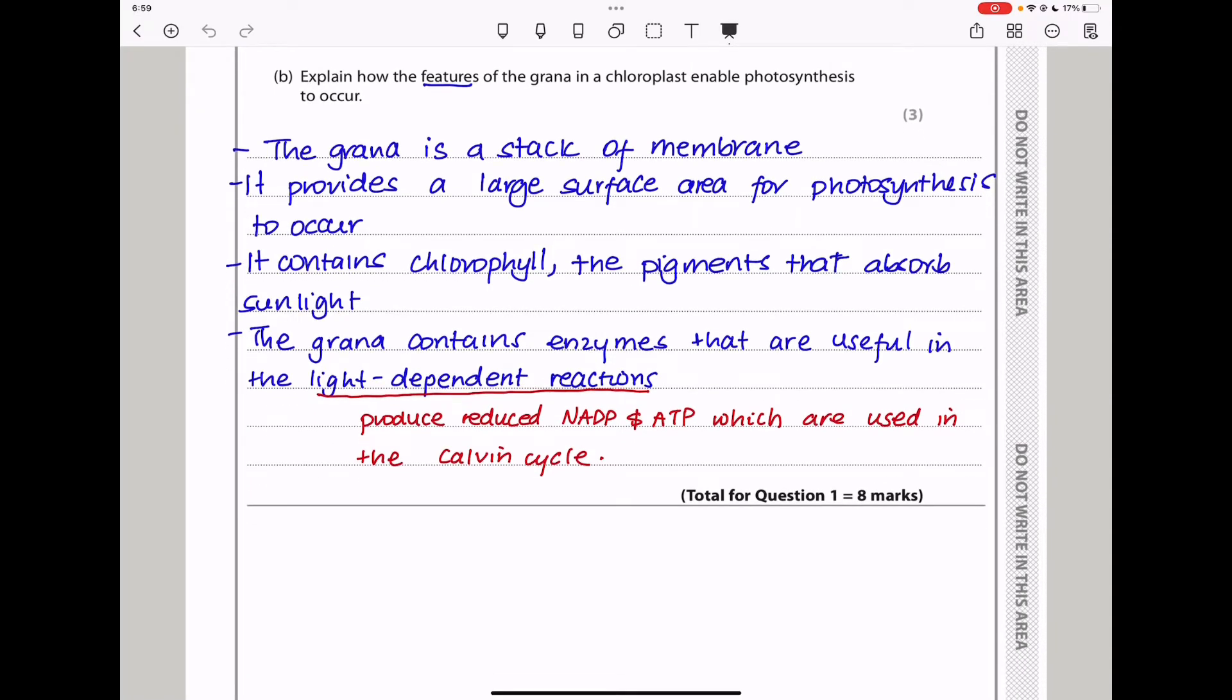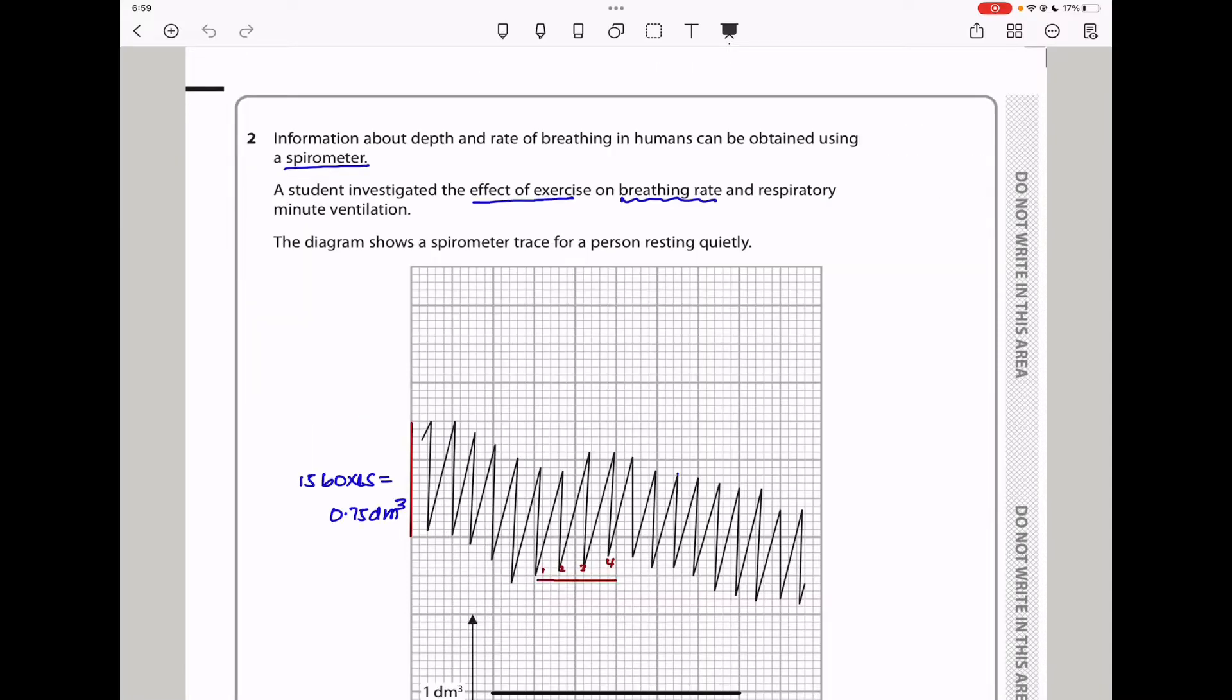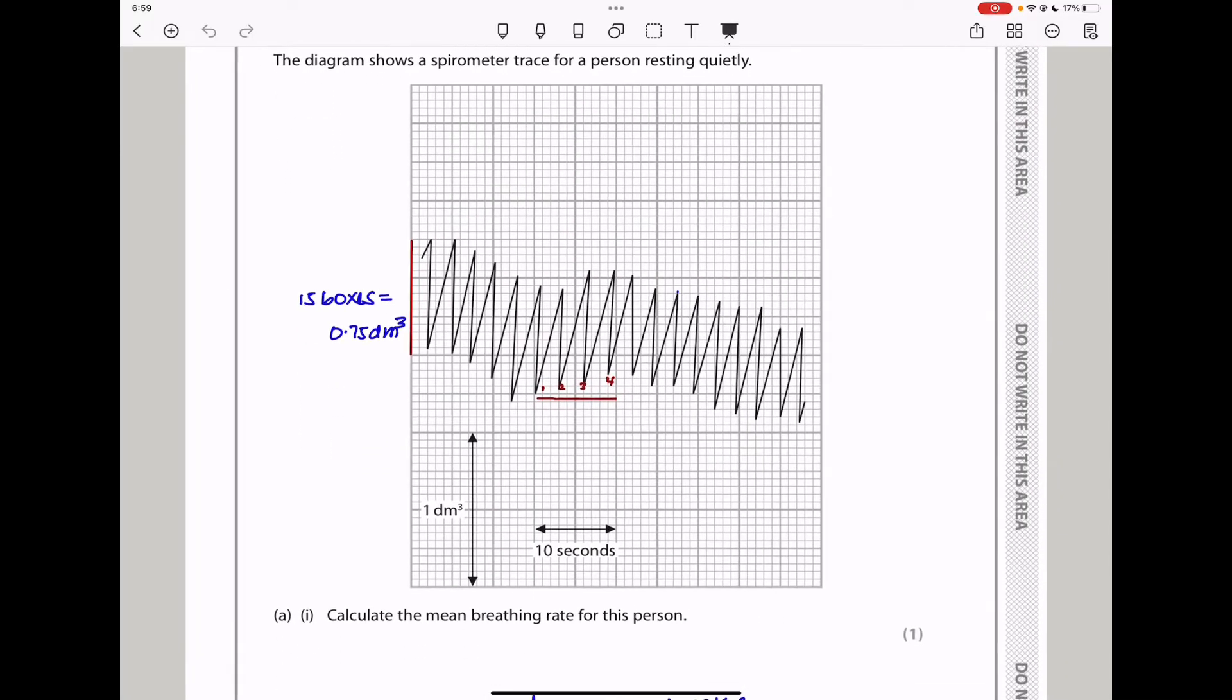Let's continue to question two. Question two: Information about depth and rate of breathing in humans can be obtained using a spirometer. A student investigated the effect of exercise on breathing rate and respiratory minute ventilation. The diagram shows a spirometer trace for a person resting quietly. So these are the results and they've given us the scale. Horizontally, we can see 10 small squares represent 10 seconds. And that means each small square represents one second. And vertically, we can see these are 20 small squares which represent one decimeter cubed.